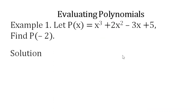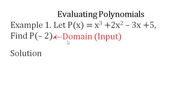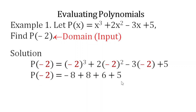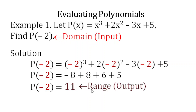The next thing we are going to learn is evaluating polynomials. Let p of x equal x cubed plus 2x squared minus 3x plus 5. Find p of negative 2. This negative 2 is our input, and we plug it into all the x's. So p of negative 2 equals negative 2 to the power of 3 plus 2 times negative 2 squared minus 3 times negative 2 plus 5. Simplifying, our answer is 11, which is the range or output.